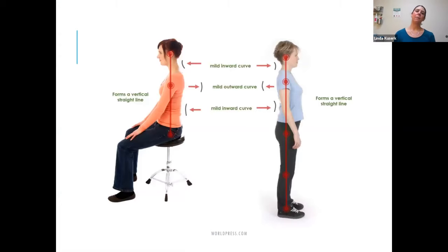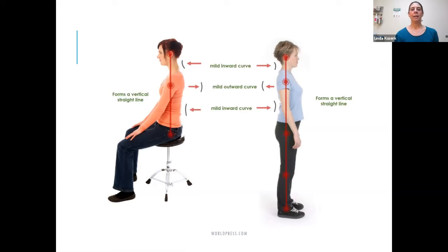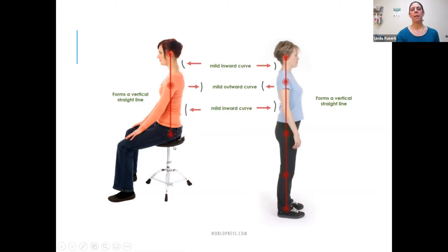This picture shows posture in sitting and standing with a plumb line — basically a string with a weight on the bottom that you hold up and align with a person's bony landmarks. We're looking for those natural curves: the cervical lordosis (inward curve in the neck), thoracic kyphosis (outward curve), and lumbar lordosis (inward curve). The more a person is in front of or behind the plumb line, the greater the forces on that area of the body.